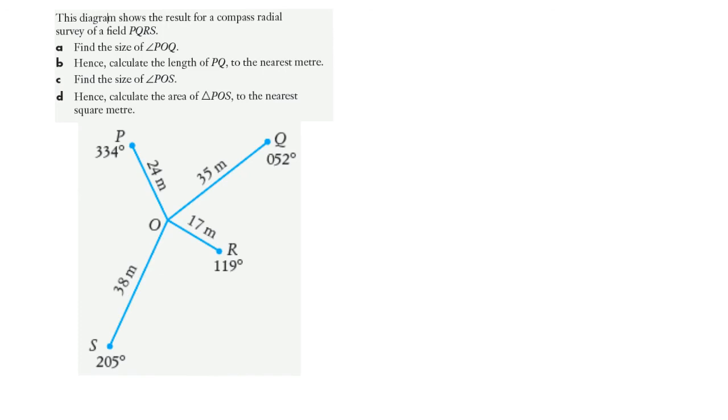Next we're asked to find the size of angle POS, which is actually very straightforward. It's our angle here. And to find the size of angle POS, I don't have to worry about including north this time or going and using west or anything like that. It's just 334 minus 205, which is 129 degrees.